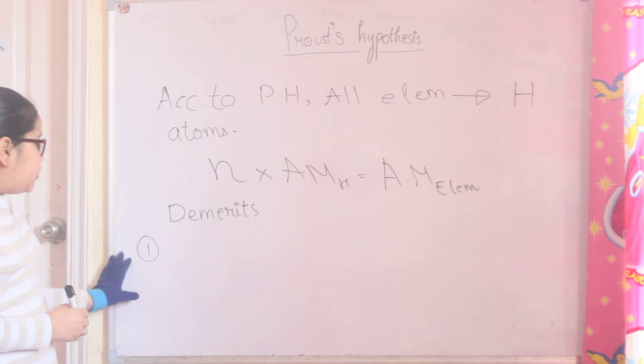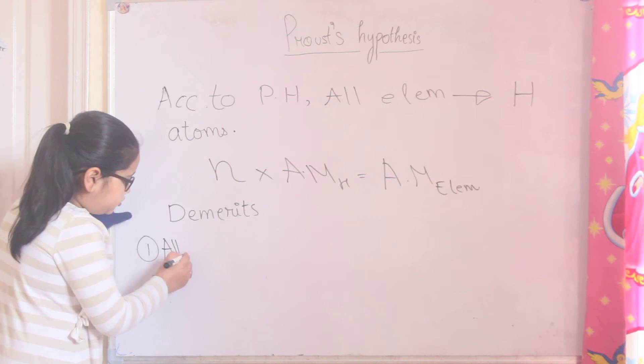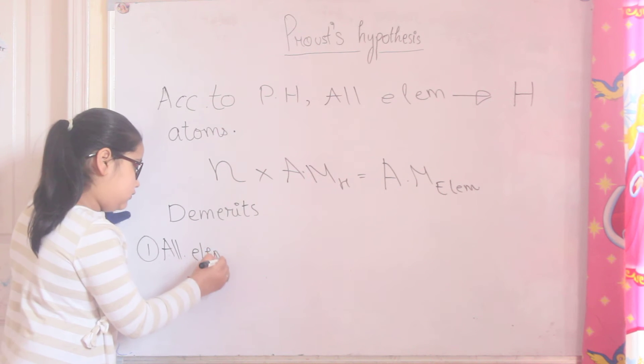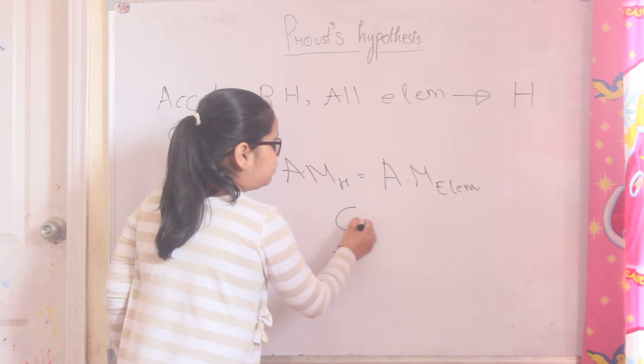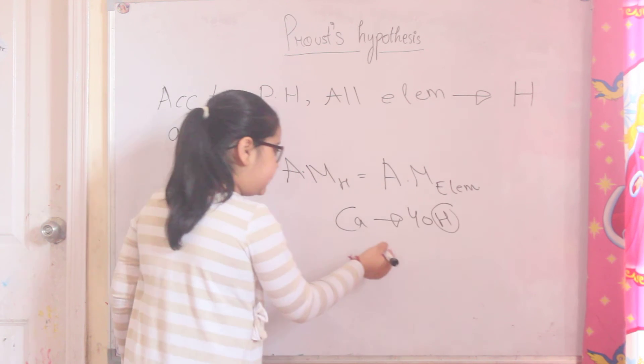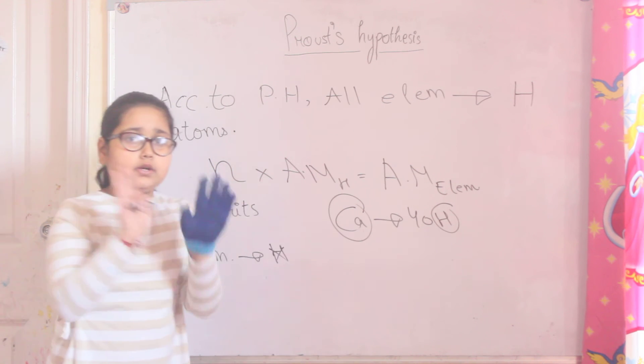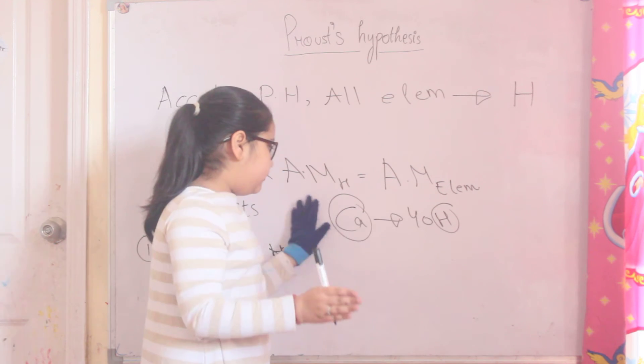The first disadvantage is that all elements cannot be made up of hydrogen. And I know that calcium is made up of 40 hydrogen atoms, but the truth is that hydrogen and calcium are two different elements.